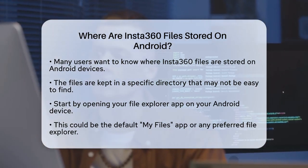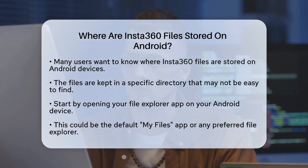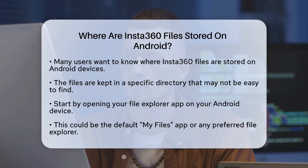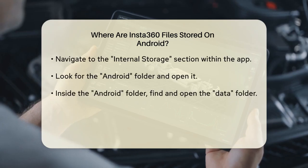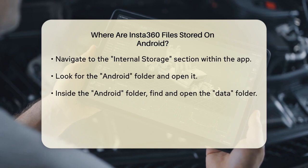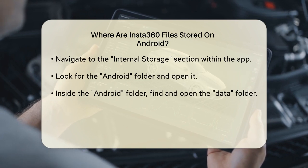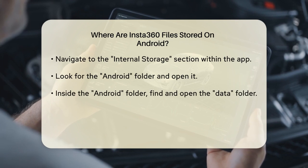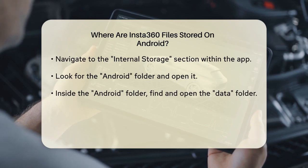First, you need to open your File Explorer app on your Android device. This could be the default My Files app on Samsung devices, or any other File Explorer you prefer. Once you're in the File Explorer, navigate to the Internal Storage section. Here, you'll need to dig a bit deeper into the folders.